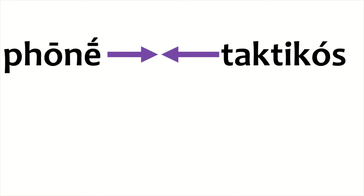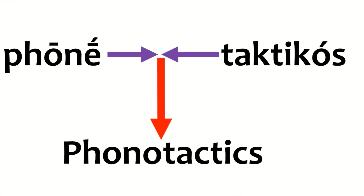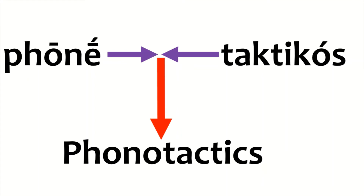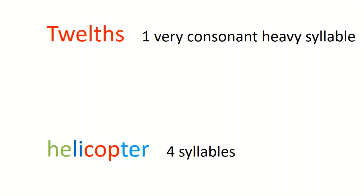The word phonotactics comes from the ancient Greek 'phone,' meaning voice, and 'taktikos,' meaning the arranging of, and describes the way your sounds interact with each other. In other words, it decides whether you can make a consonant-heavy word like 'twelfths,' with four consonants in a row, or a more conservative word, like 'helicopter.'